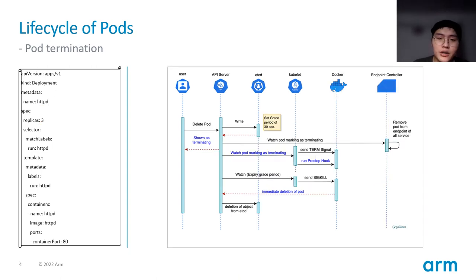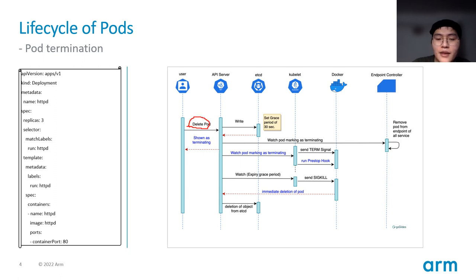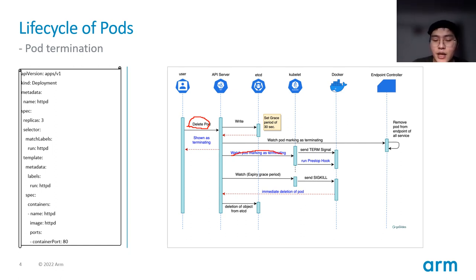Pod termination does things opposite to creation. The user sends the delete pod request to the API server. The kubelet notices the deletion, performs the delete via container runtimes, and informs the API server at last.